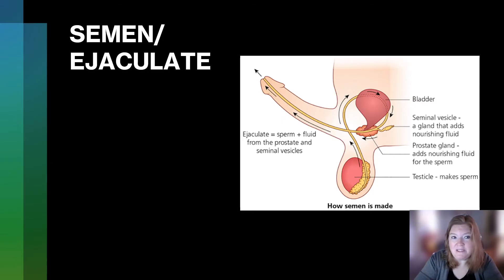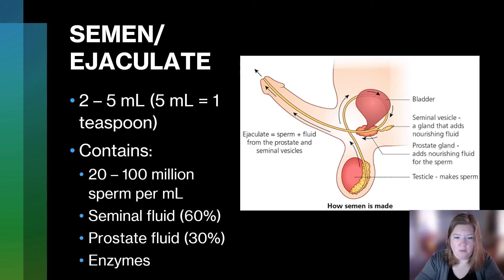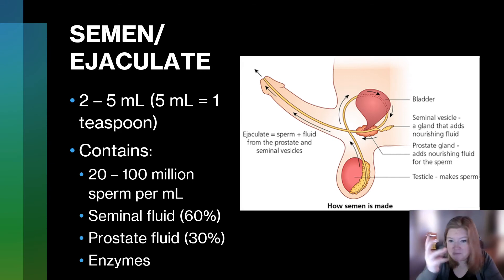Let's look at semen or ejaculate. It is two to five milliliters — five milliliters is a teaspoon, so it's equal to or less than a teaspoon. Per milliliter, it has 20 to 100 million sperm, so in a five milliliter sample that's potentially 500 million sperm. It contains seminal fluid, prostate fluid, some other fluids, and also some enzymes which we'll talk about later.